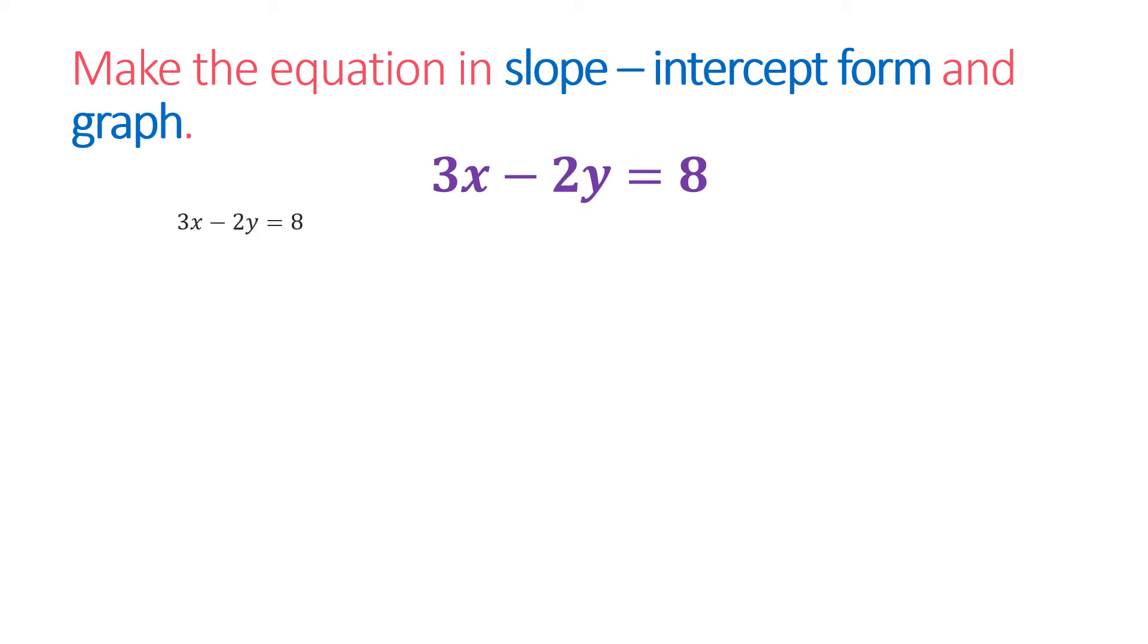Writing the equation 3x minus 2y equals 8, the idea is that you need to work that in y form. So we isolate the y variable. We have 3x minus 2y equals 8. Subtracting 3x from both sides, the difference is negative 2y equals negative 3x plus 8.